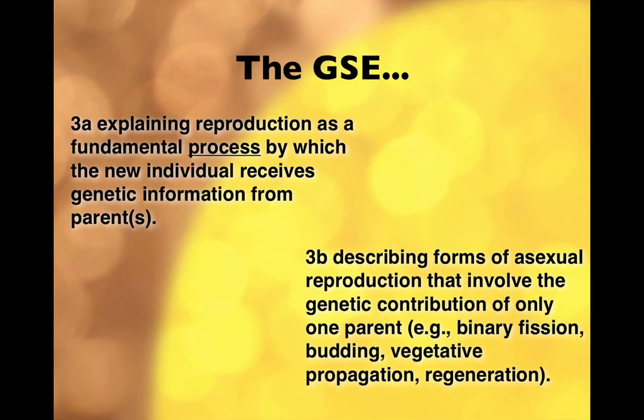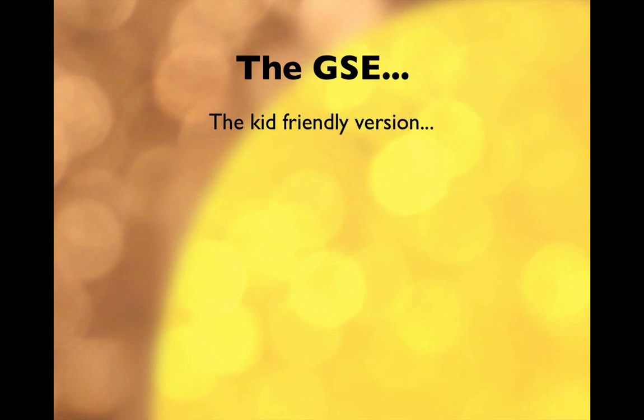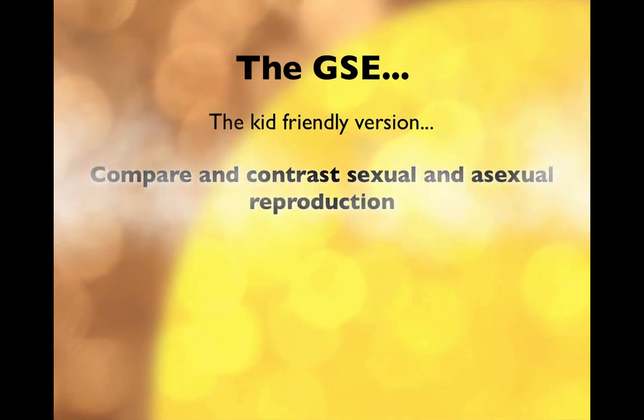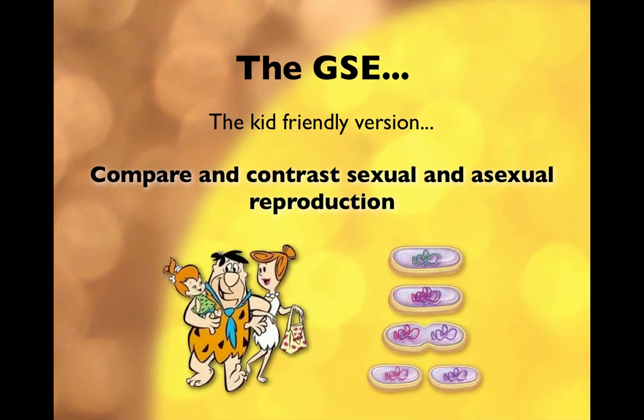The GSEs we're going to talk about are the ones written by the state. We're going to look at reproduction as the process where new individuals are formed and receive genetic information from their parents — or parent in some cases. A more kid-friendly version: we're going to compare and contrast sexual and asexual reproduction. That's the one you need on the front of your graphic organizer.